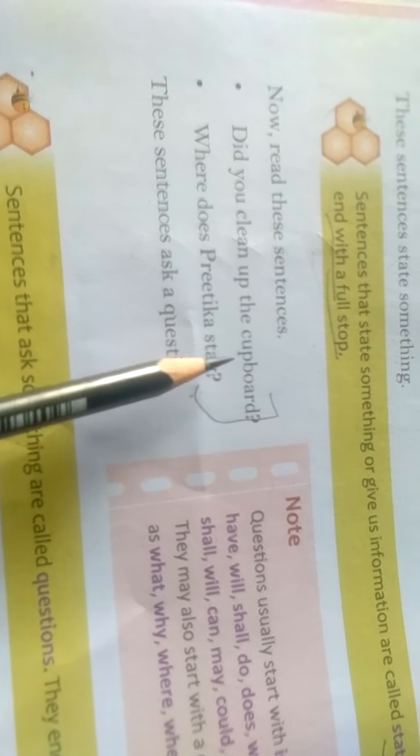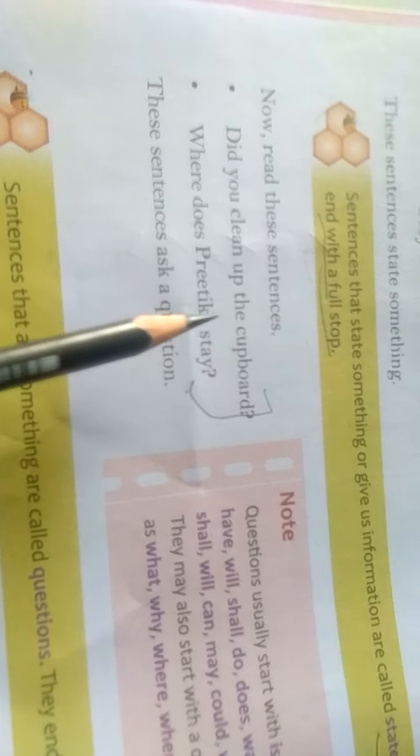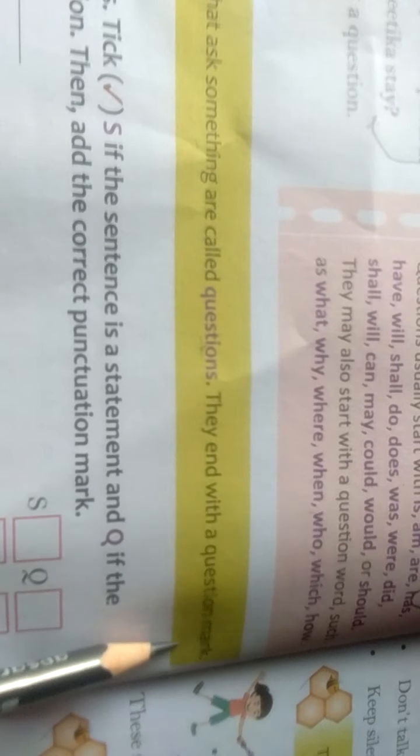Now, read these sentences. Did you clean up the cupboard? Where does Pritika stay? These sentences ask a question. Students, as you can see, in these two sentences, they are asking questions. There is a question mark also. Sentences that ask something are called questions. Jo sentences, jin sentences mein kuch poocha jata hai, unko hum questions kehte hain. They end with a question mark. And remember, questions always end with a question mark.